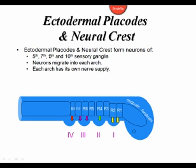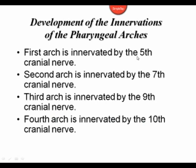The neural crest cells migrating from the rhombomeres are going to contribute to the sensory ganglia, giving rise to ganglia associated with cranial nerve 5, cranial nerve 7, cranial nerve 9, and cranial nerve 10. So each arch has its own nerve supply. The first arch is innervated by the 5th cranial nerve; the second arch is innervated by the 7th cranial nerve; the third arch is innervated by the 9th cranial nerve; and the fourth arch is innervated by the 10th cranial nerve.